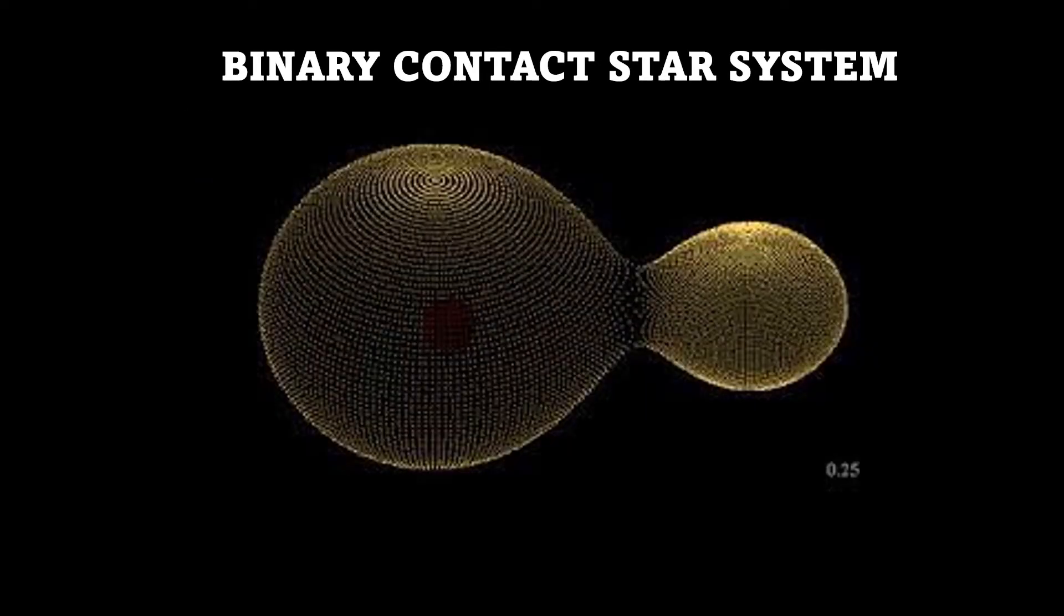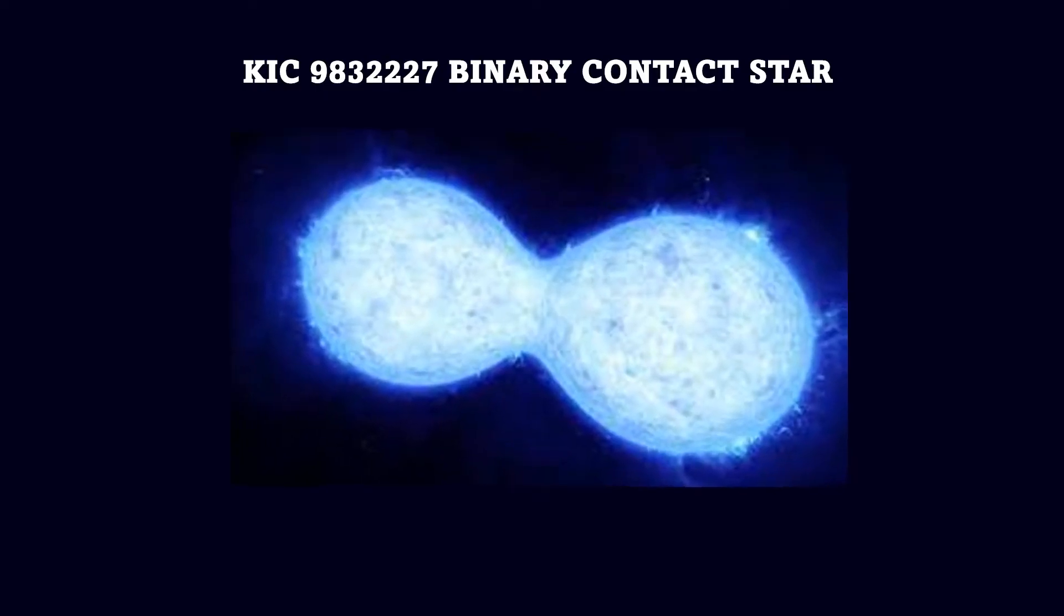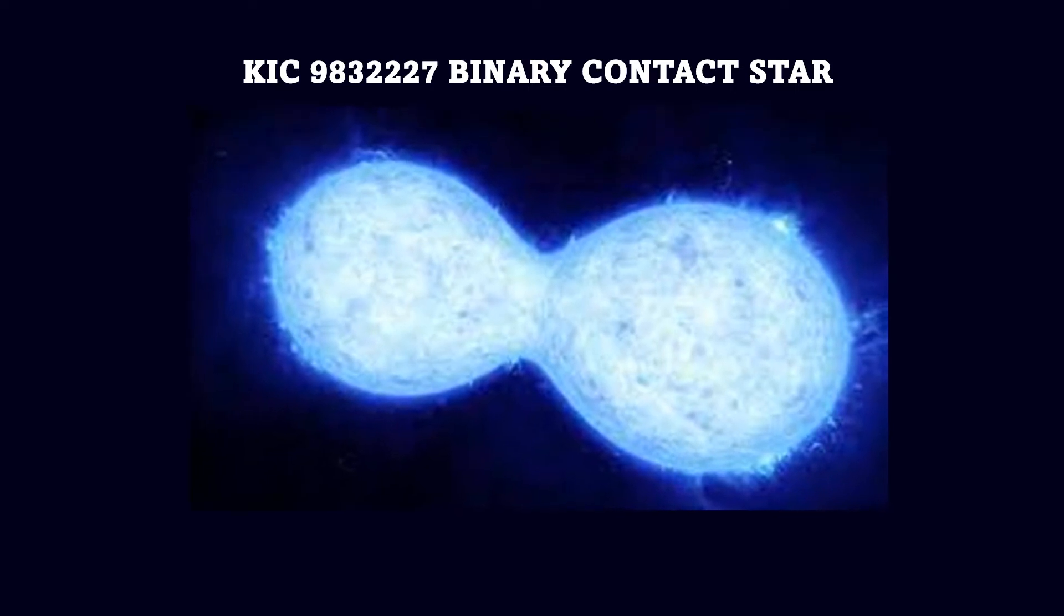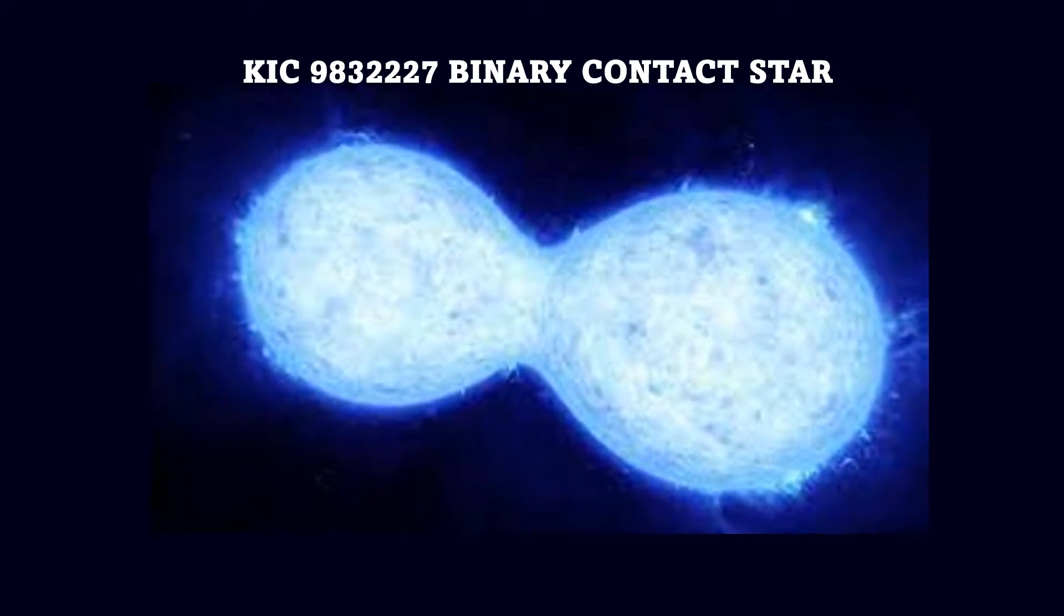In this system the two stars are in physical touch with each other and are rotating on their axis. KIC-9832227 is also a binary contact star which is going to merge then explode in a luminous red nova in the sky.